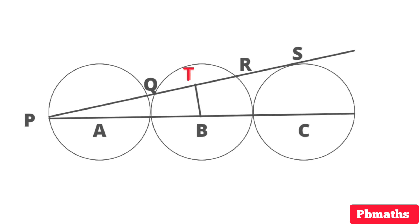Let's say T be the midpoint of QR and let's join B and T. We know that the line segment which joins the center of the circle and midpoint of the chord is always perpendicular to the chord.